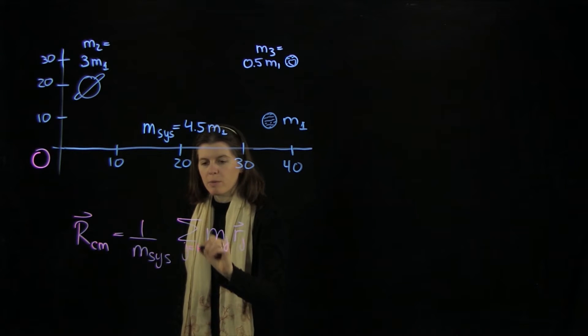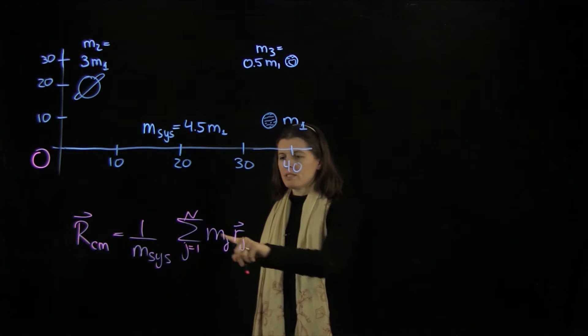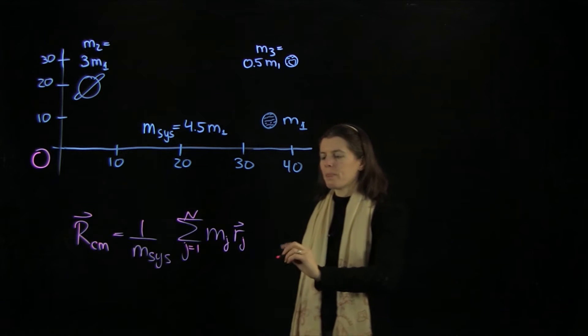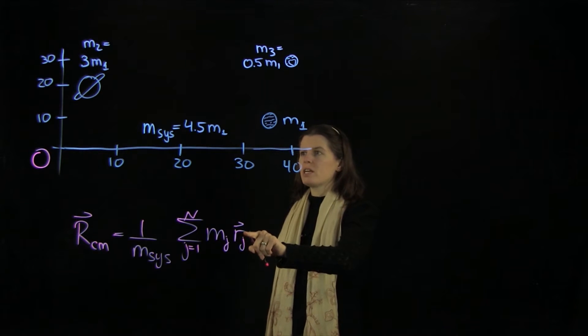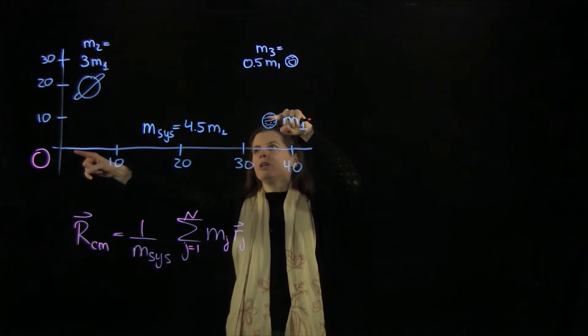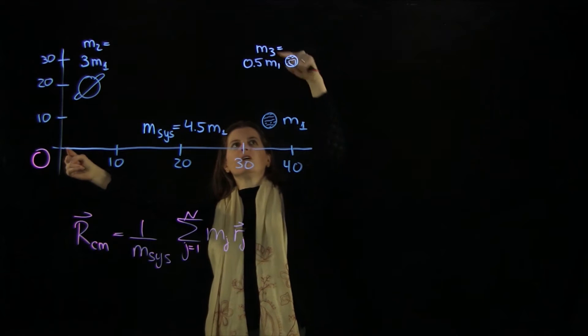We're going to sum here over j from 1 to n. That means we need to now write out the sum for our three planets and give this radius here. So r1 would be going from here to here, r2 goes from here to there, and r3 from here to here.